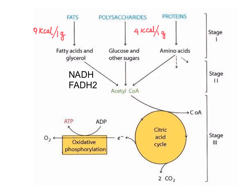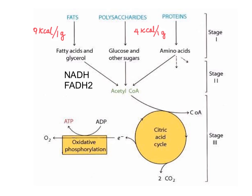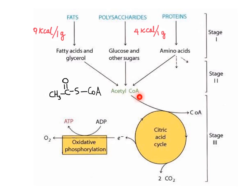However, one molecule of NADH and one of FADH2 are extracted in each round of the formation of acyl coenzyme A. This will translate in the formation of 3 ATP molecules per NADH and 2 ATP molecules per FADH2. Two-carbon acetyl groups from all fuels attach to coenzyme A, forming acetyl coenzyme A.